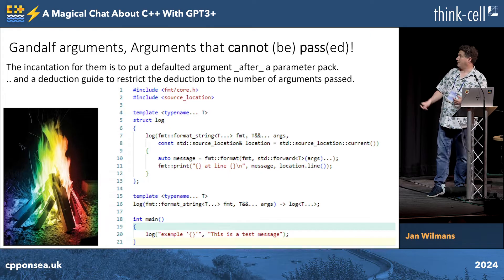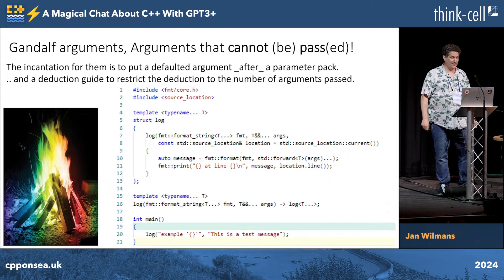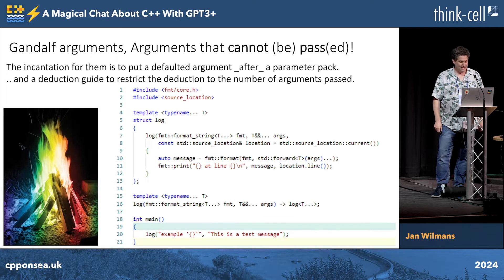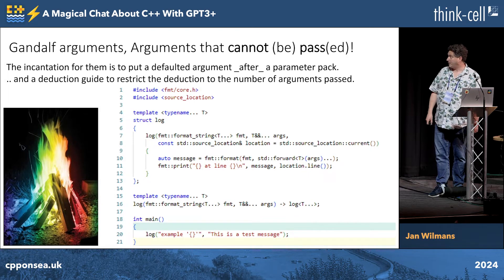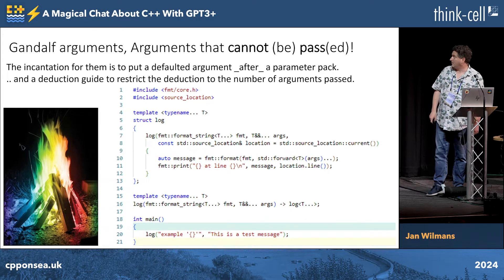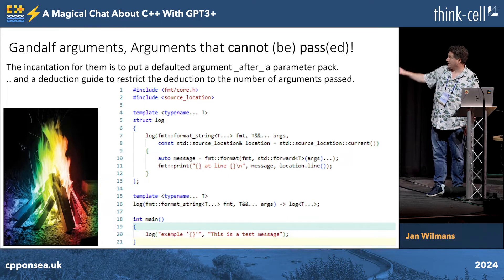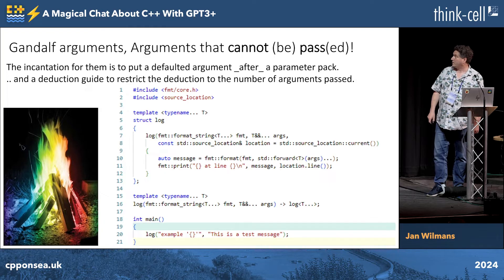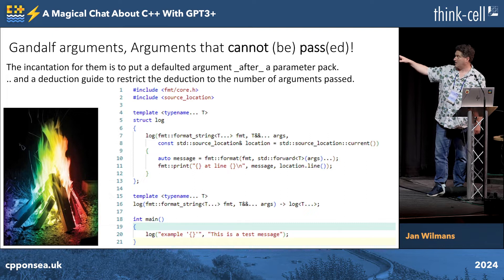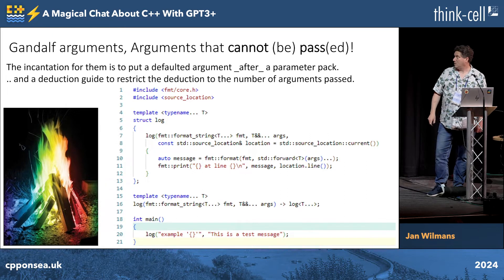Then we have something I made up: Gandalf arguments — arguments that shall not pass, or that cannot be passed. This is an example of one, a very useful one I think: a logging function where you can get a variable number of arguments, but it actually ends with a source location, which is weird because I will decide what's the end of the variable arguments.